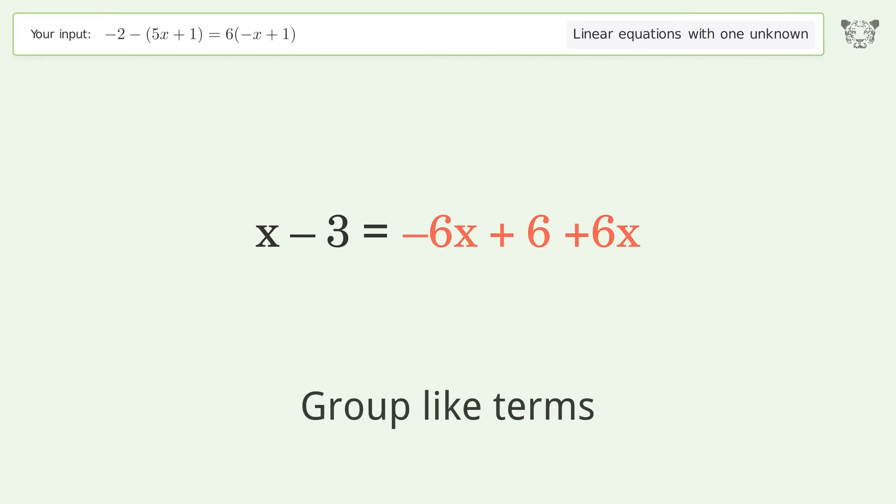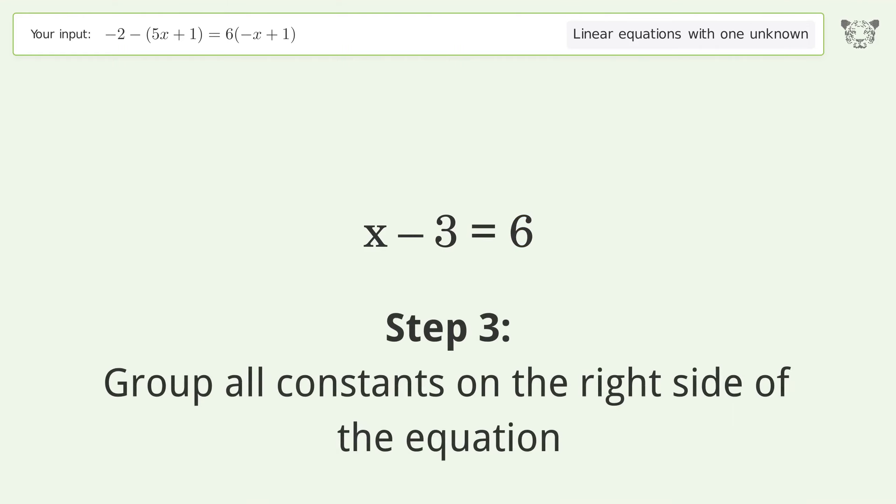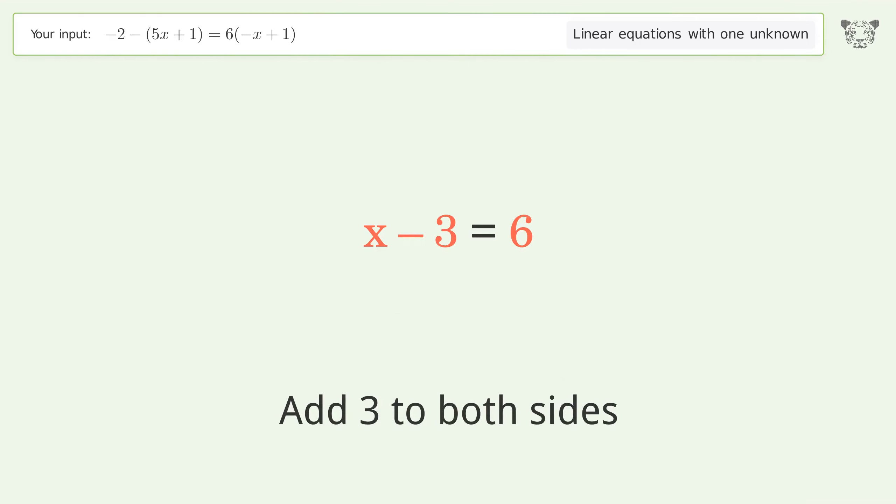Group like terms. Simplify the arithmetic. Group all constants on the right side of the equation. Add 3 to both sides. Simplify the arithmetic.